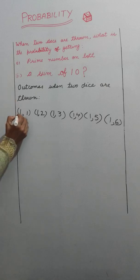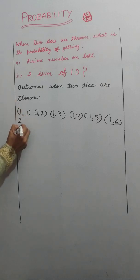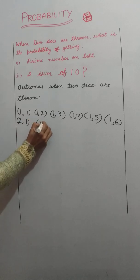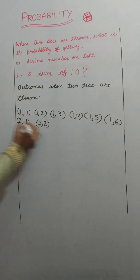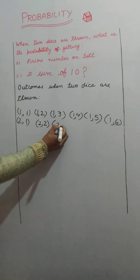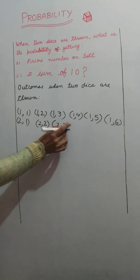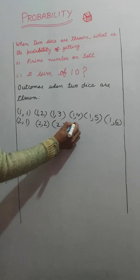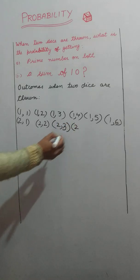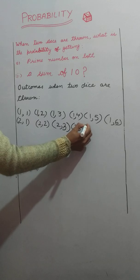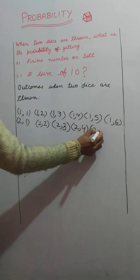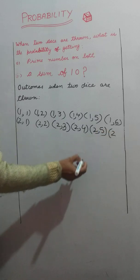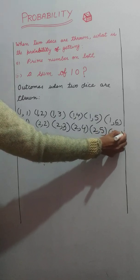It may also be 2 on the first die and 1 on the second; 2 and 2; 2 and 3; 2 and 4; 2 and 5; 2 and 6.